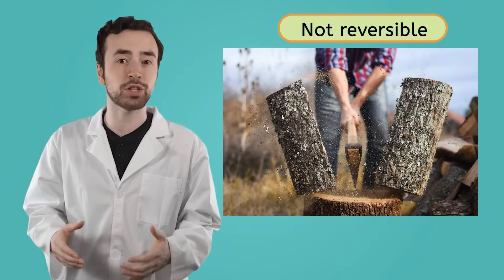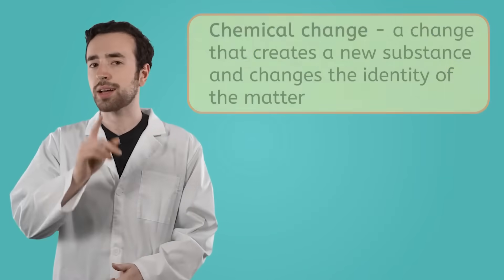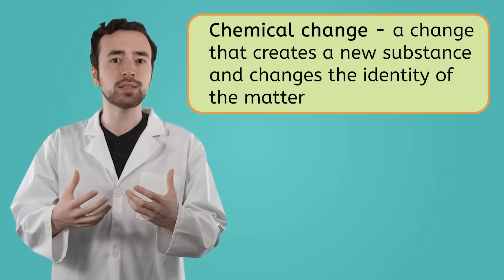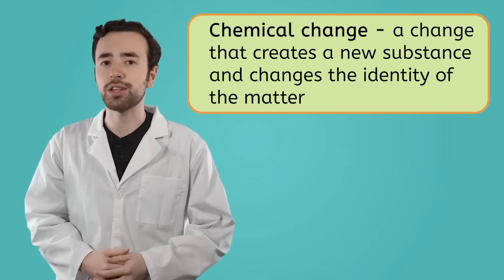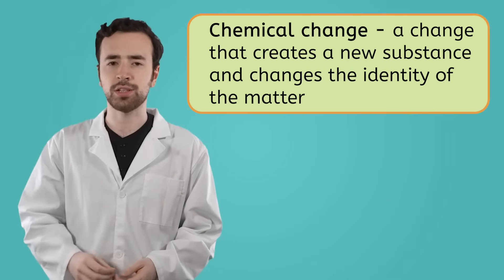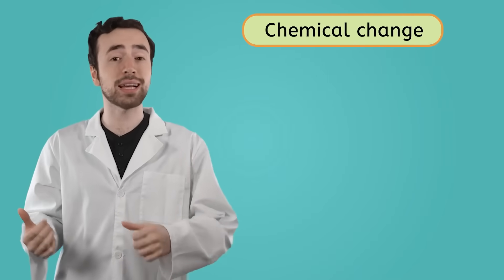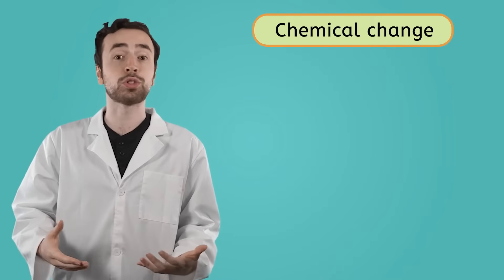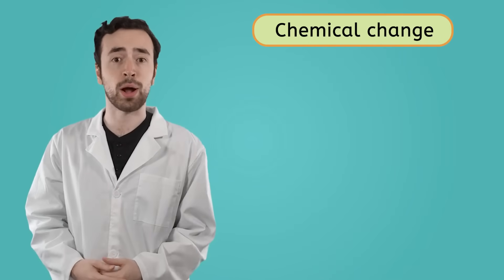and that is a huge distinction between physical changes and chemical changes. A chemical change is a change that happens when different matter meets to turn into new substances. When a chemical change happens, the identity of the matter itself changes. We've already seen some examples of chemical changes back in our last lesson when we learned about chemical properties. After all, a chemical change is what needs to happen in order to be able to observe a chemical property.